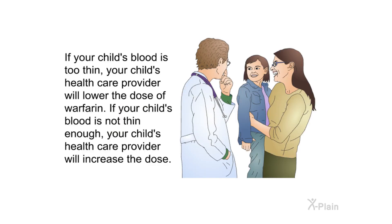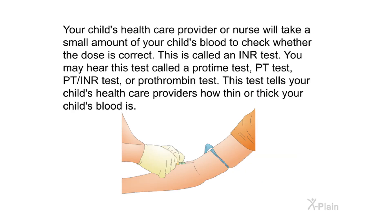If your child's blood is too thin, the health care provider will lower the dose of warfarin. If it is not thin enough, the provider will increase the dose. Your child's health care provider or nurse will take a small amount of blood to check whether the dose is correct. This is called an INR test — you may also hear it called a protime test, PT test, PT-INR test, or prothrombin test. This test tells your child's health care providers how thin or thick your child's blood is.